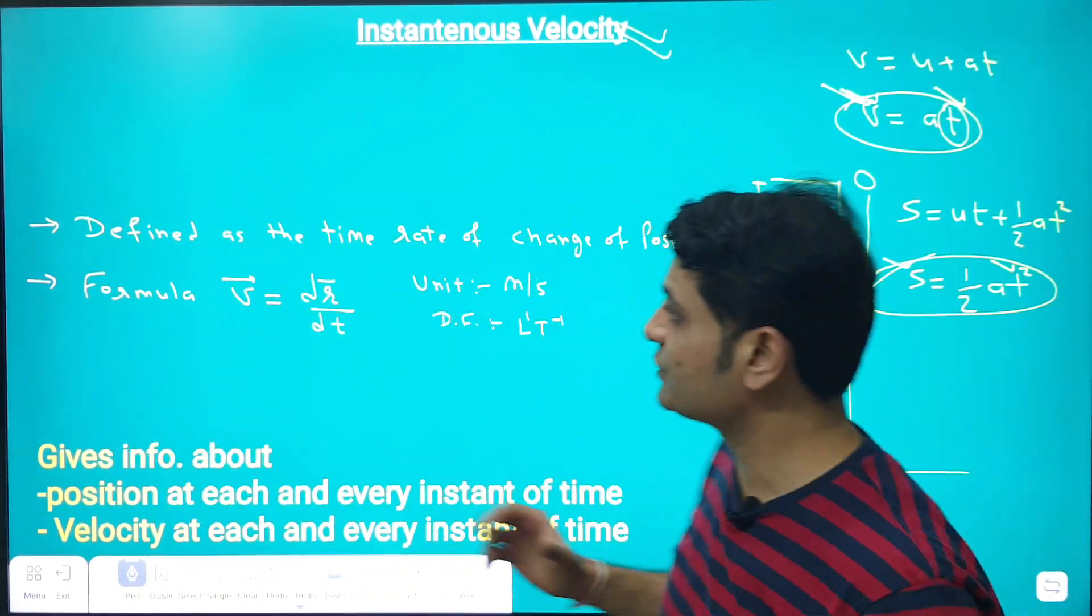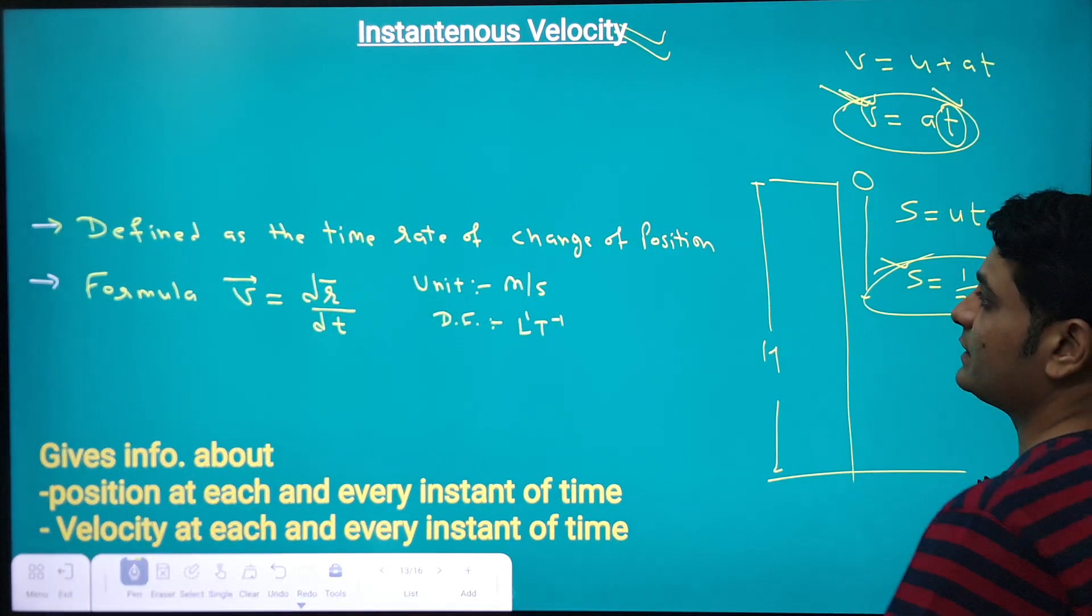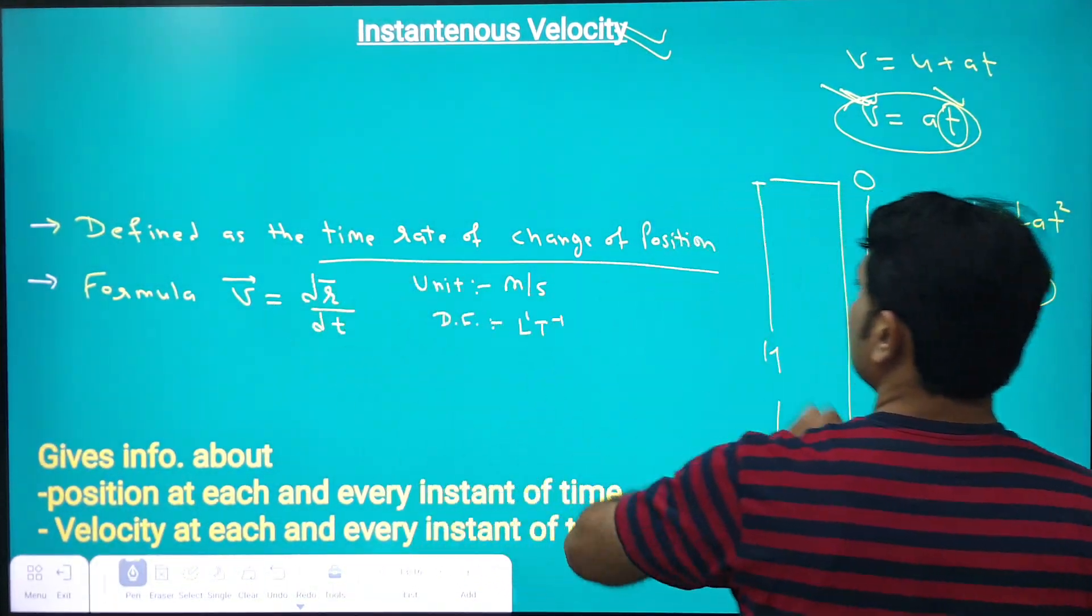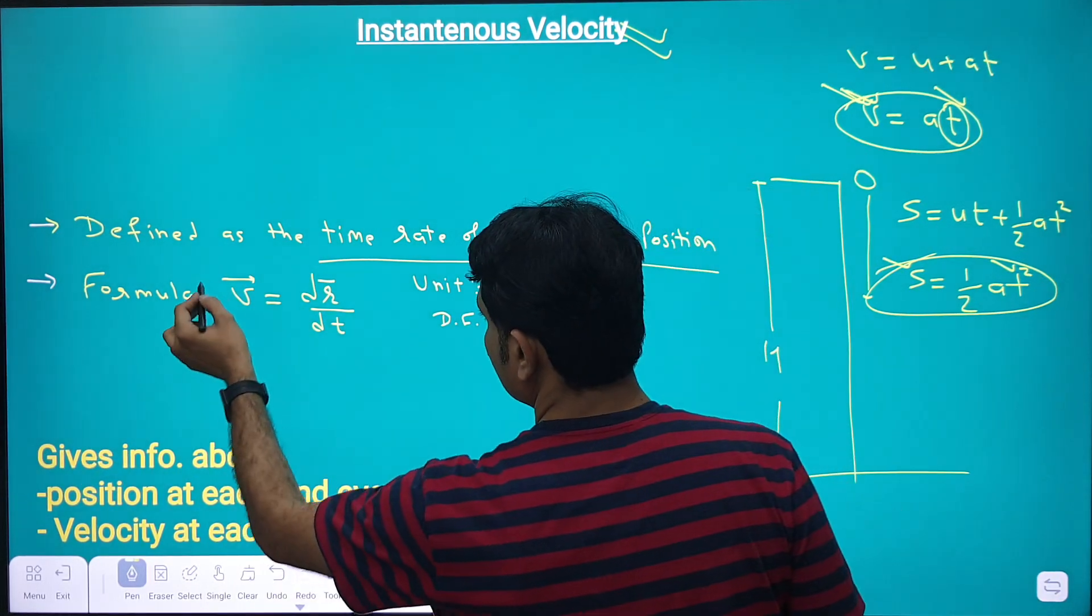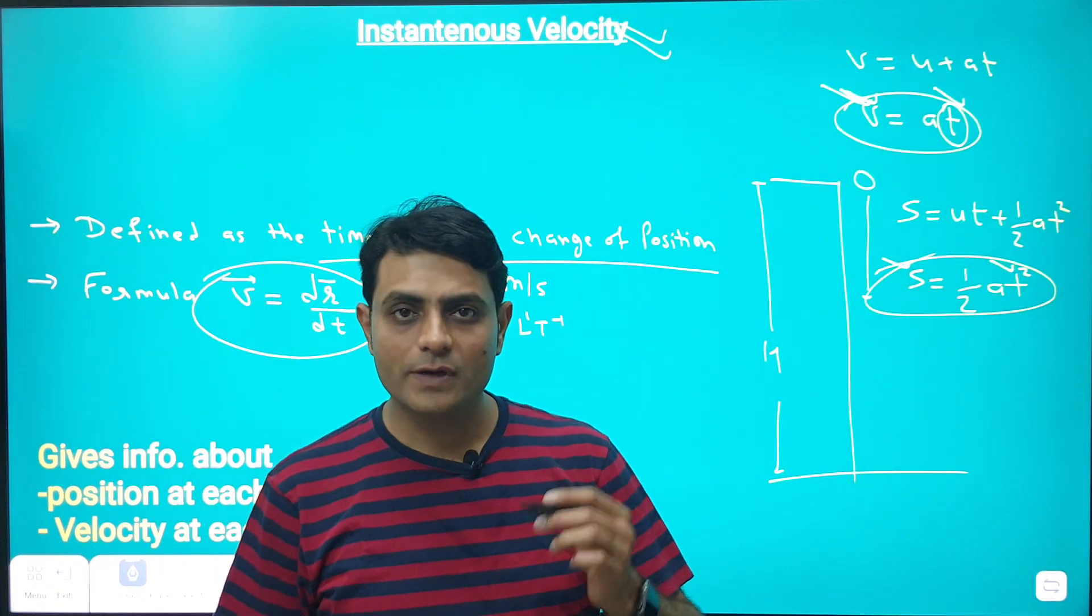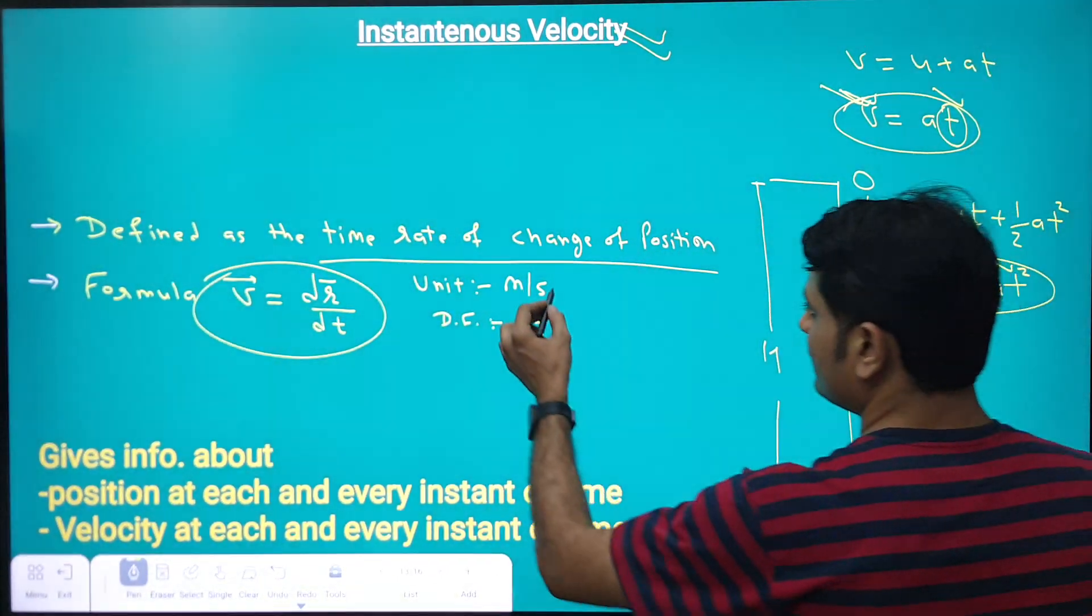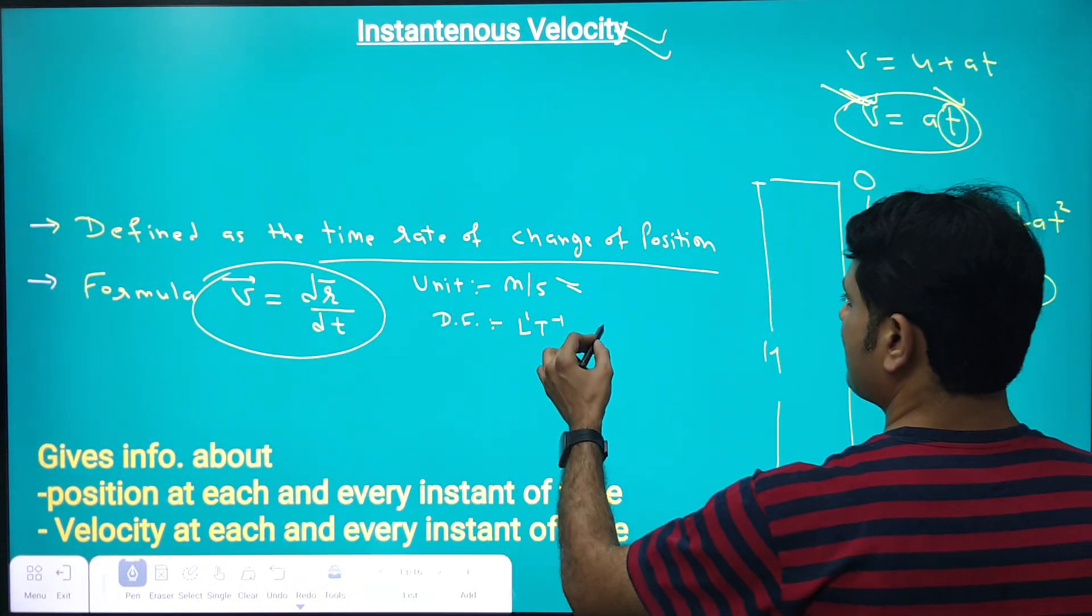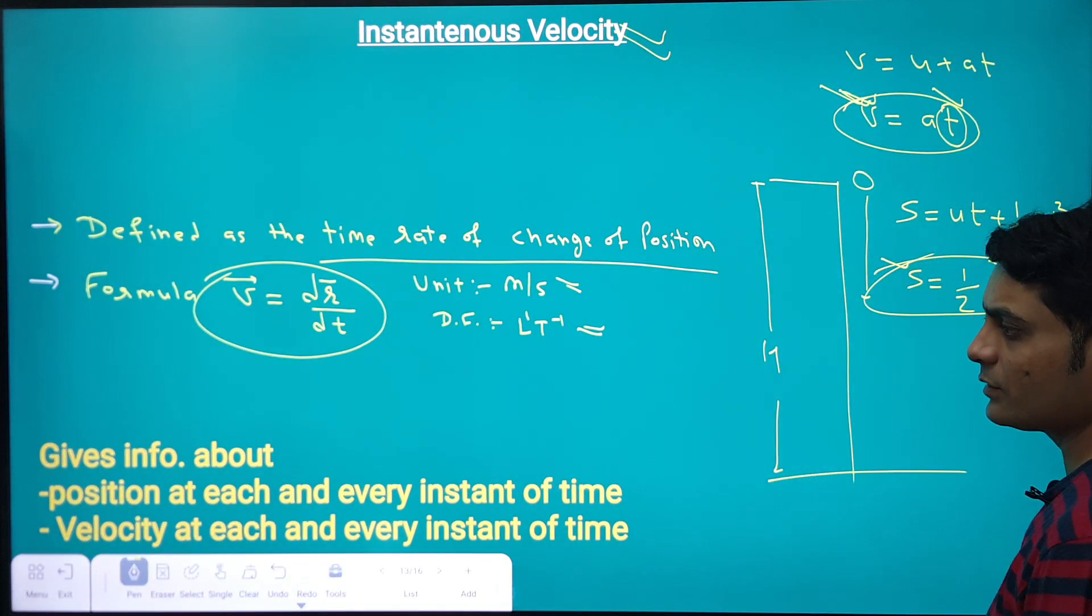Let's see its definition. Instantaneous velocity is defined as the time rate of change of position. Time rate of change of position means v = dr/dt, where dr indicates the time rate of change of position. Its unit will be meter per second and dimensional formula will be L¹T⁻¹.